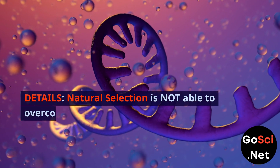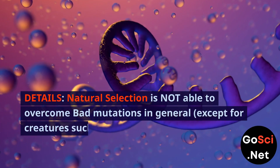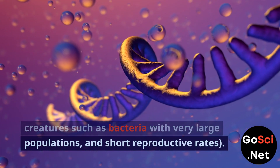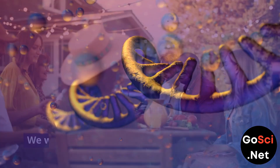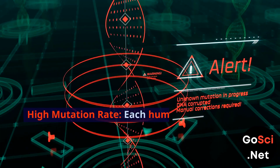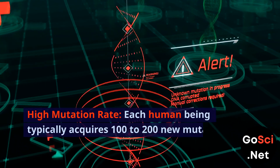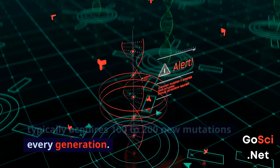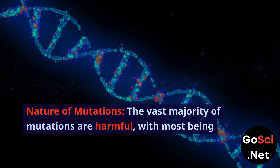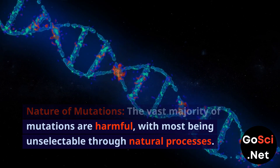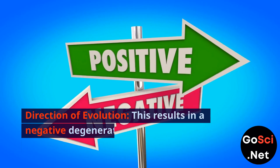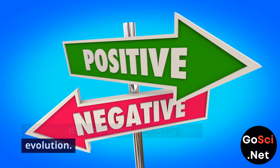Details. Natural selection is not able to overcome bad mutations in general, except for creatures such as bacteria with very large populations and short reproductive rates. Looking at humans as an example: high mutation rate — each human being typically acquires 100 to 200 new mutations every generation. The vast majority of mutations are harmful, with most being unselectable through natural processes. This results in a negative, degenerating trajectory for evolution.